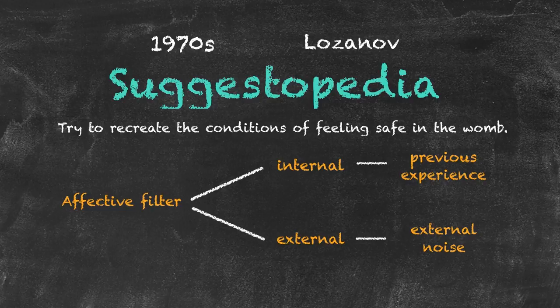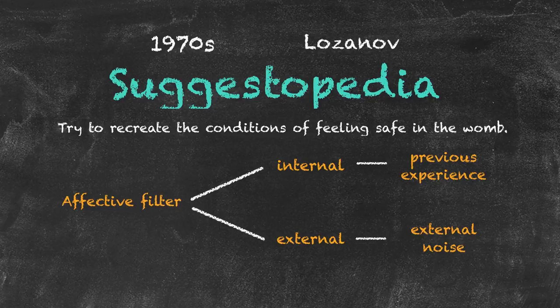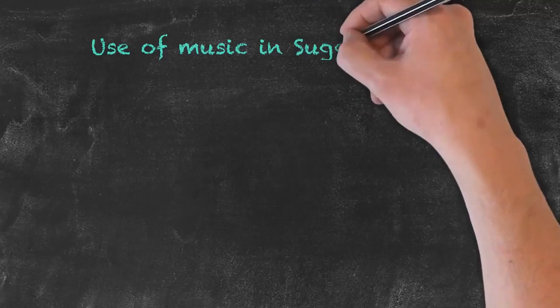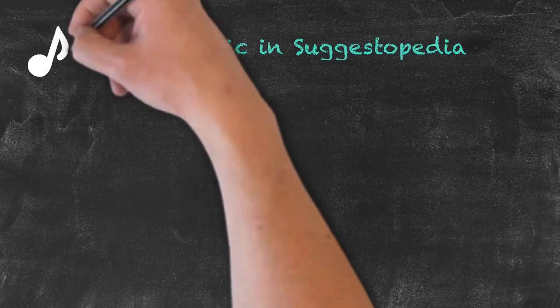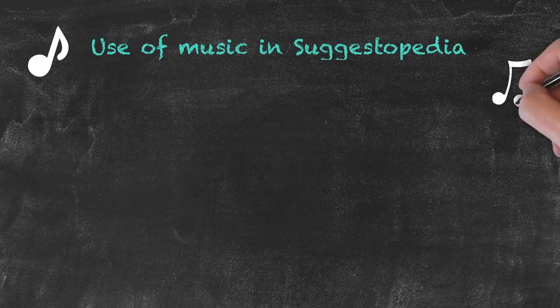So how do we actually go about teaching in this situation? What we try to do is, first of all, reduce the affective filter through the internal and external factors down to its lowest value, so our students are made to feel comfortable. Then we have the use of music. The use of music in Suggestopedia takes different forms depending on which part of the lesson we're in.